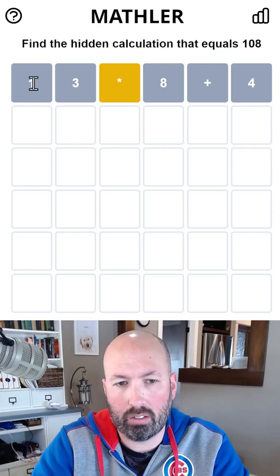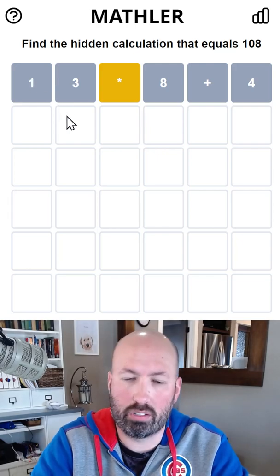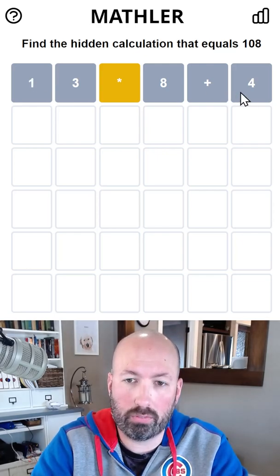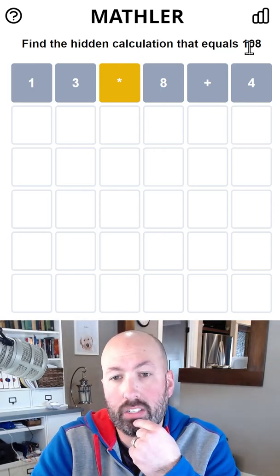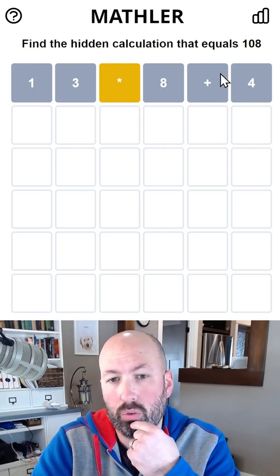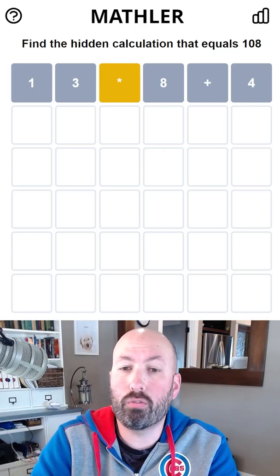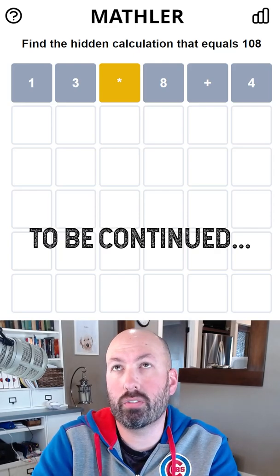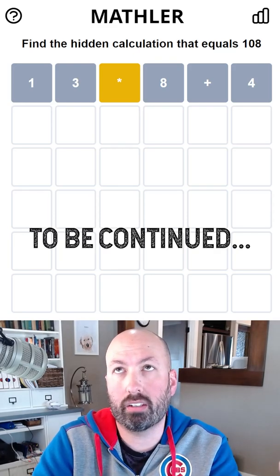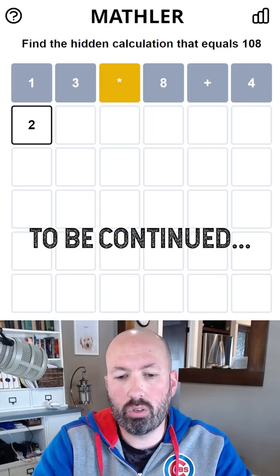And it can't start with a 1. It's gotta start with a 2 or a 5. Maybe we could do 50-something times 2, but we can't add. If we did 50, like 56, 57, something like that, and then subtracted. Let's try 2 times 56.